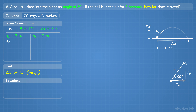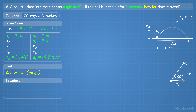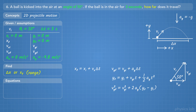We don't know the final x position — that's what we're trying to find — but since we're assuming the ball ends at the ground, the final y position is 0 meters. We don't know the x and y velocities, but we know the x acceleration is 0, and the y acceleration is negative g. So we're not given a lot of information. How can we find the range of the ball, and what equations can we use?